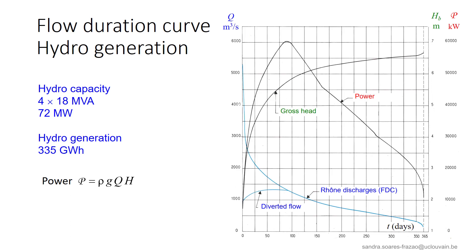The flow duration curve for the Rhône is given here, this curve here. For low discharges, all the discharge is diverted towards the power plant, while for higher discharges, only part of it is used to produce electricity. The rest just flows through the dam.